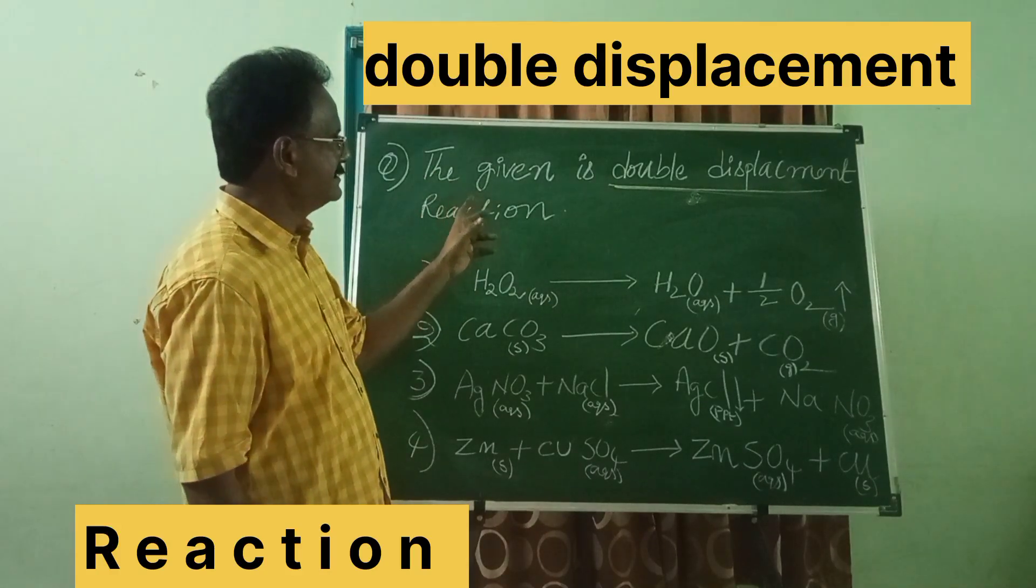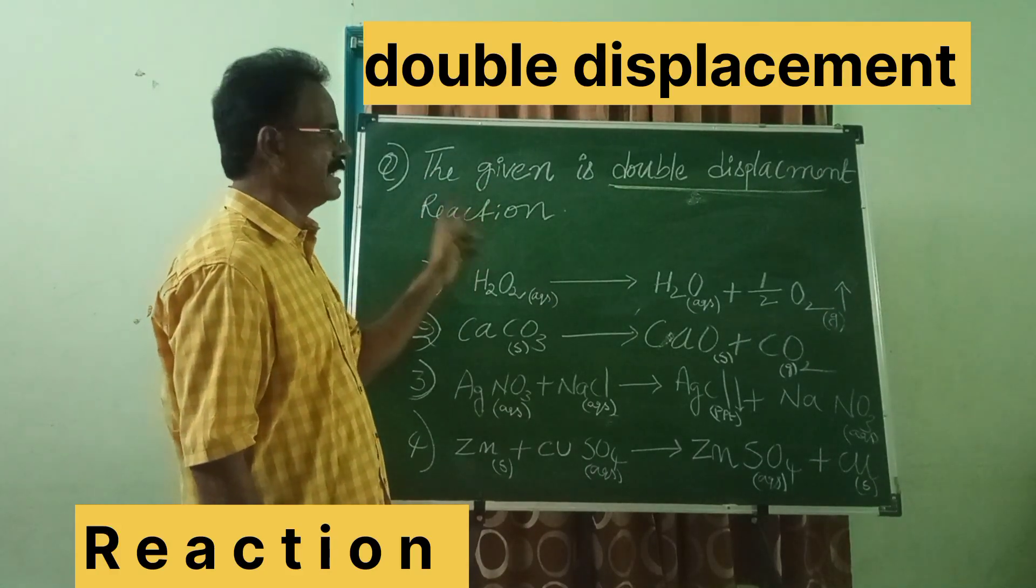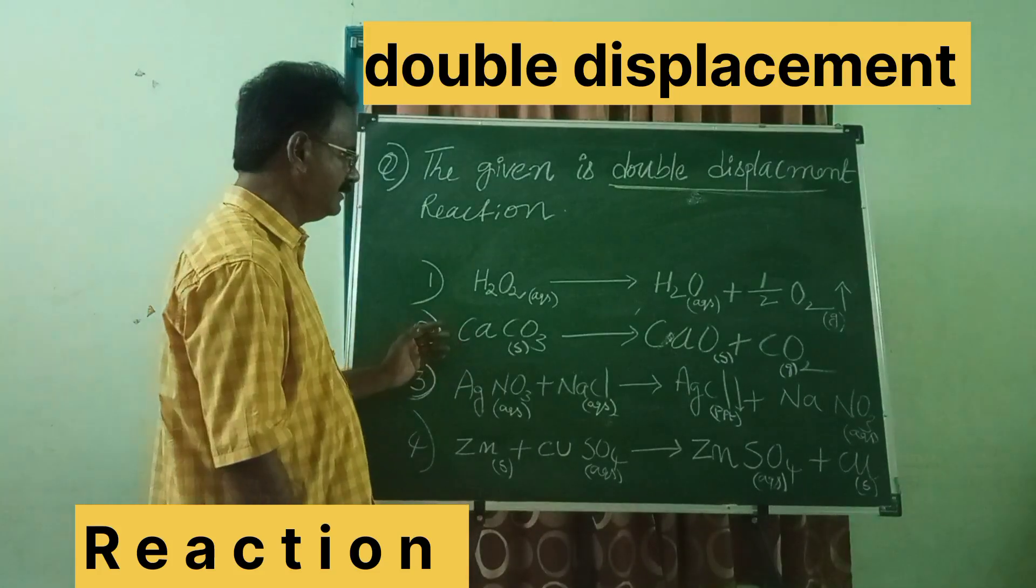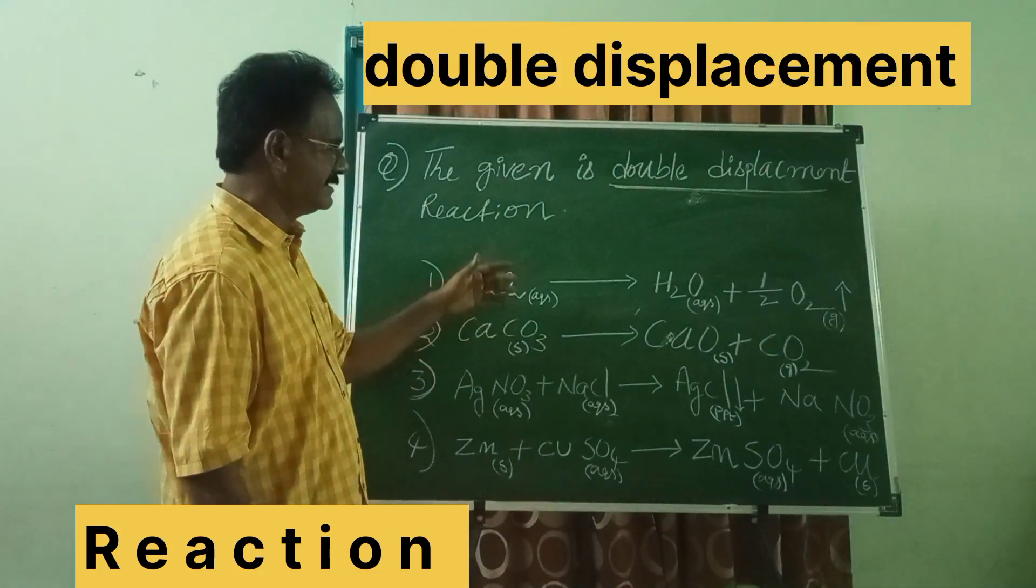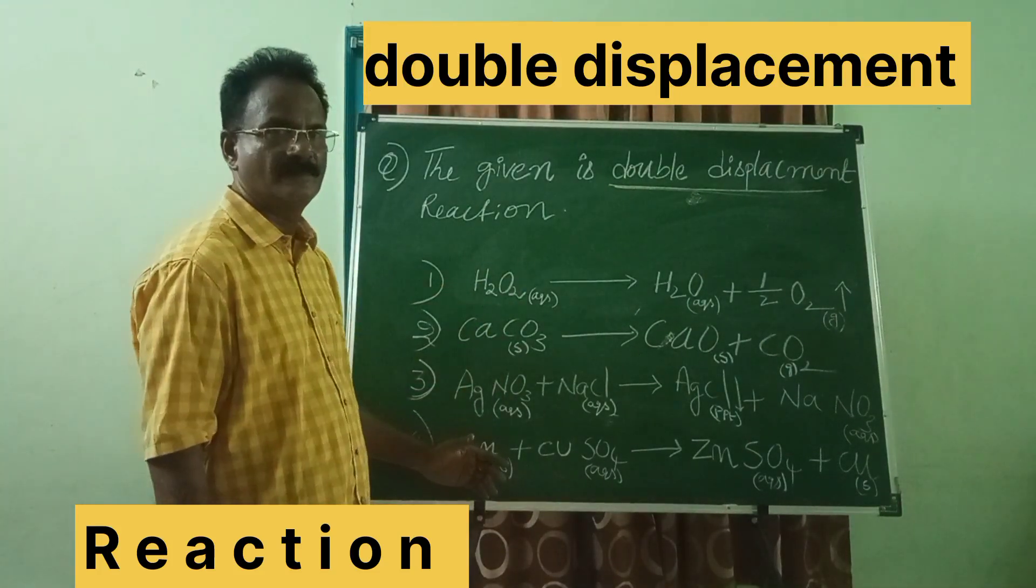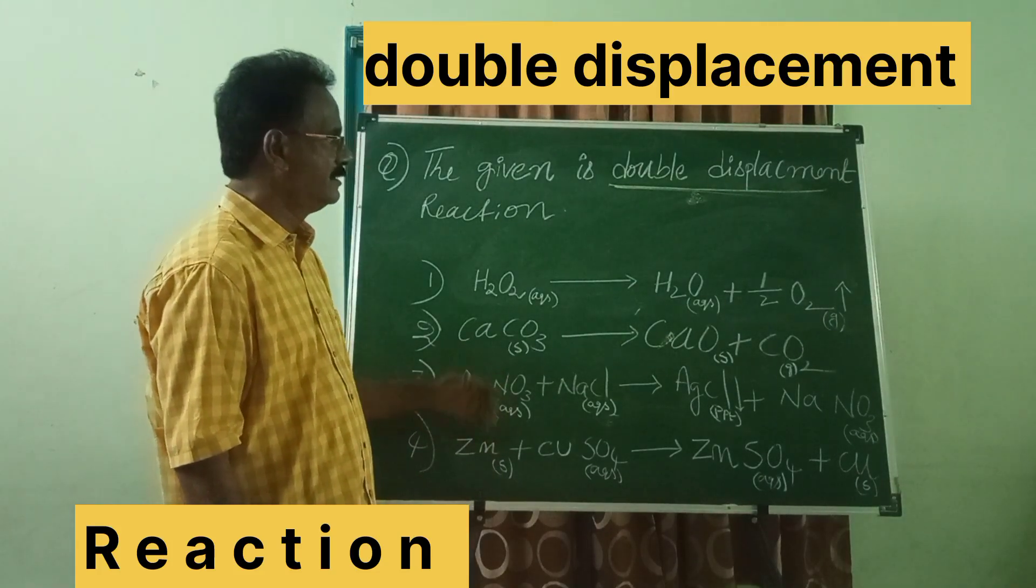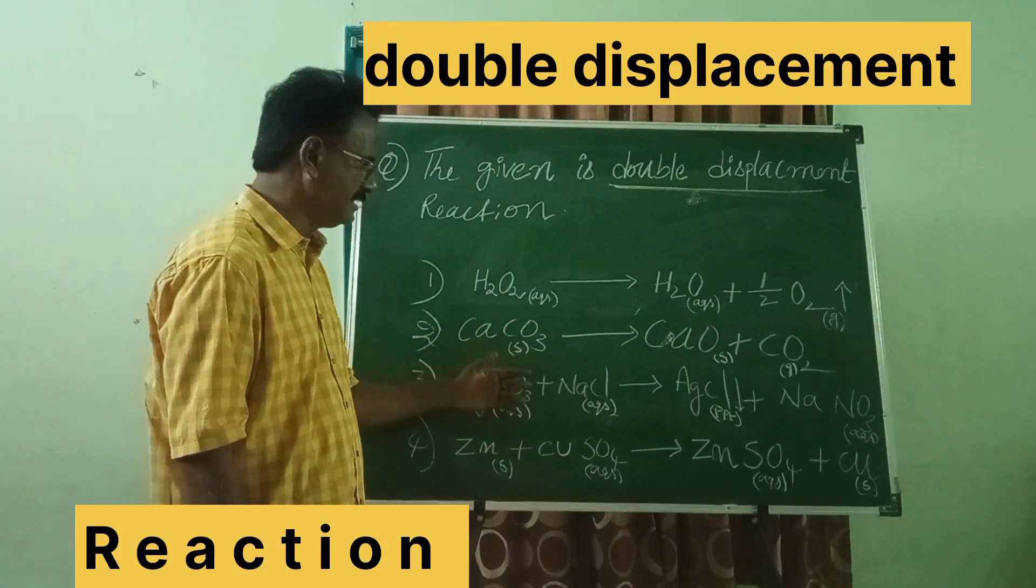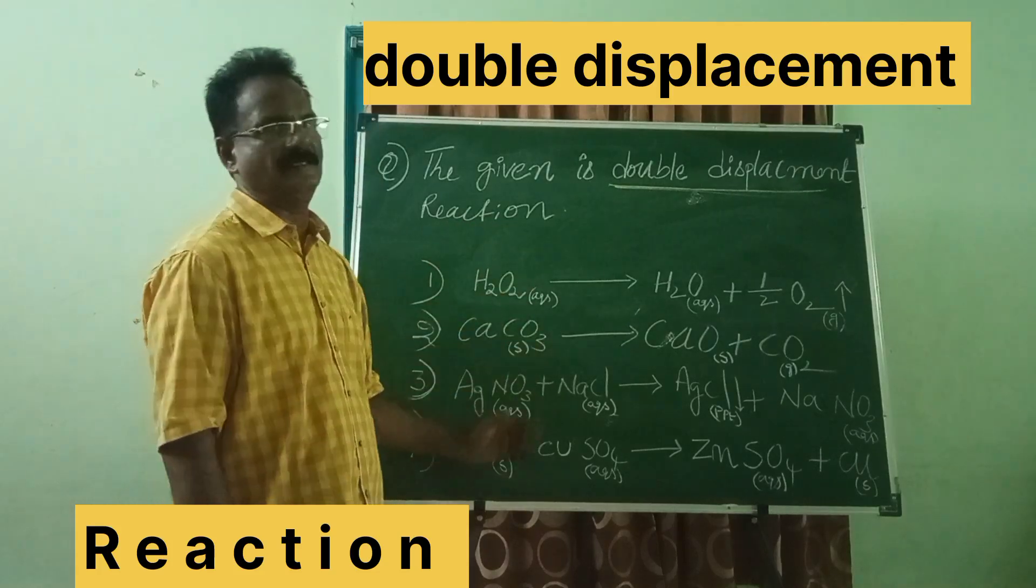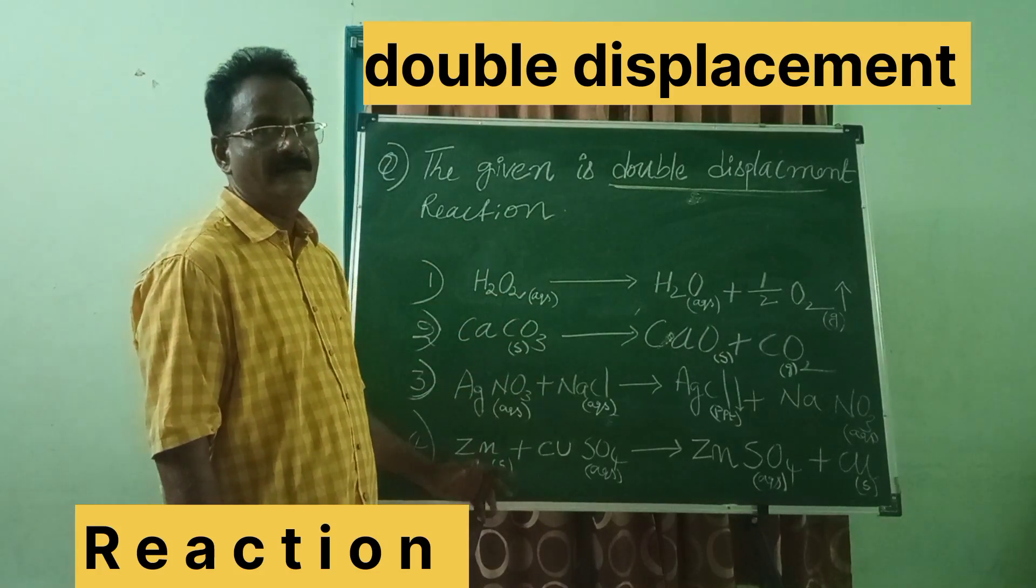The given is double displacement reaction. Here, they have given a set of reactions. Now one has to find double displacement reaction from these four reactions. Let us do it.